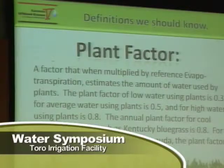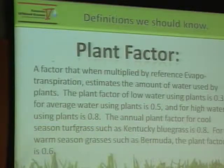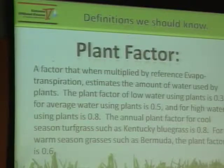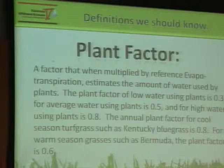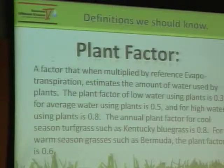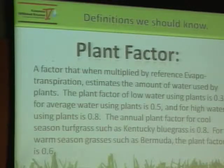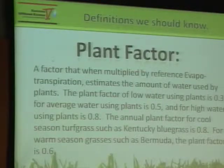A plant factor or crop coefficient is different for different species of plants. Turf grass has a crop coefficient value of approximately 0.8 for cool season turf. But it varies throughout the year, so you need to know what that is and you can adjust your irrigation systems accordingly. Low water using plants might only have a plant factor of 0.3. And what that means: if we take that plant factor and multiply the reference ET by the 0.3, that's what the ET is for that plant.